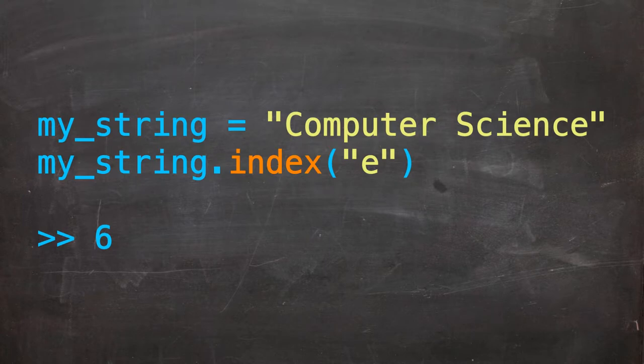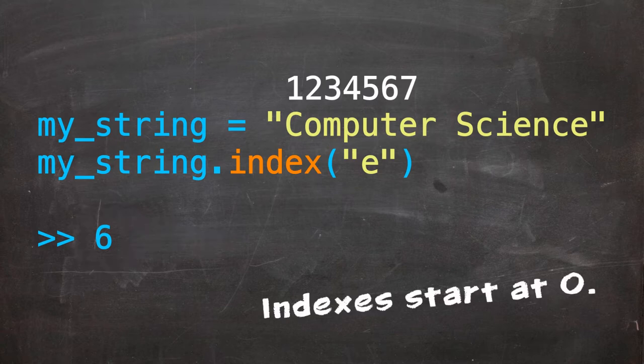We might notice something odd here. The first e is the seventh character but it gives us back six. This is because indexes in most programming languages start at zero.